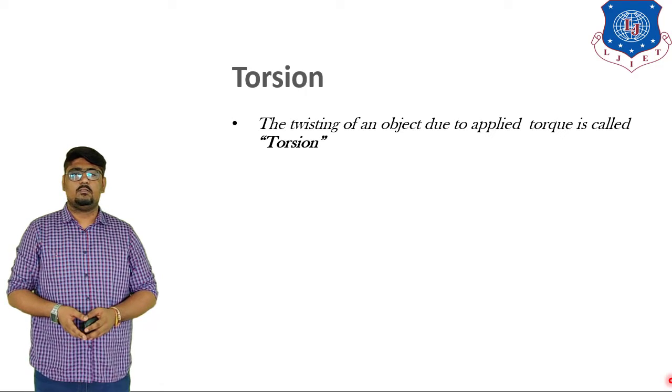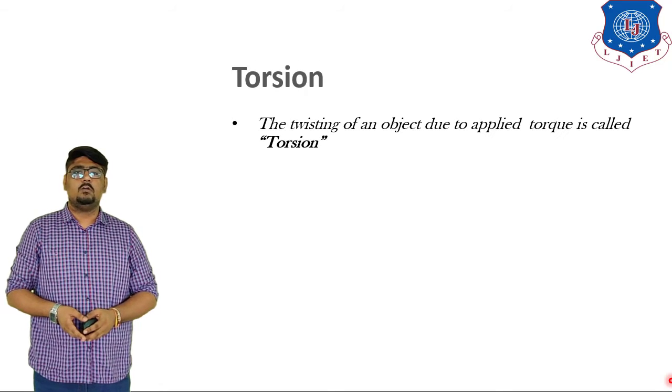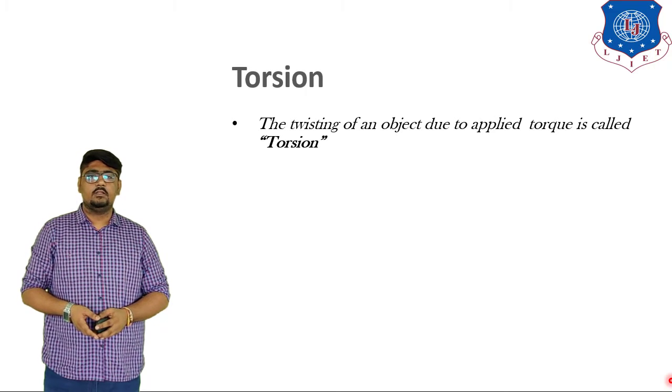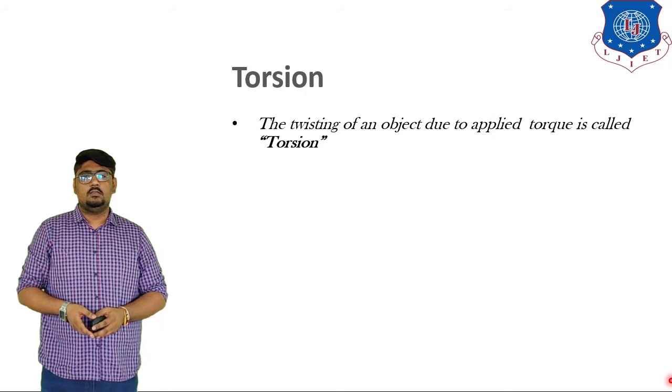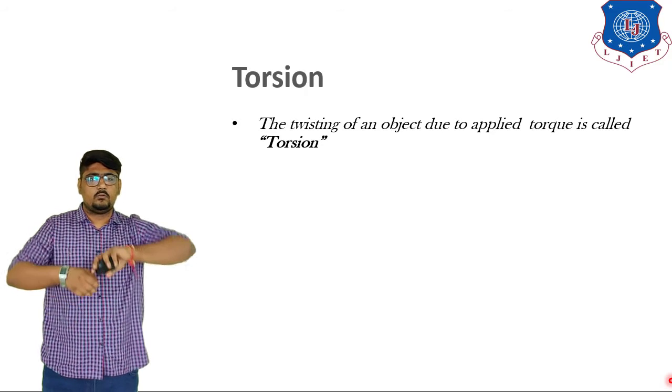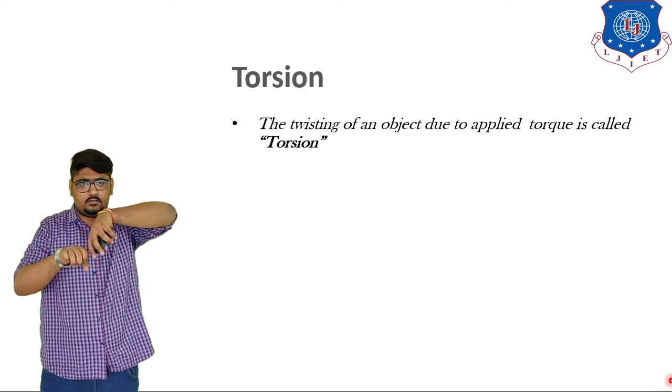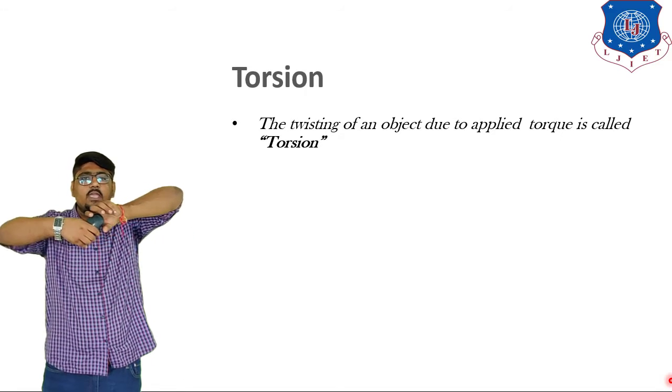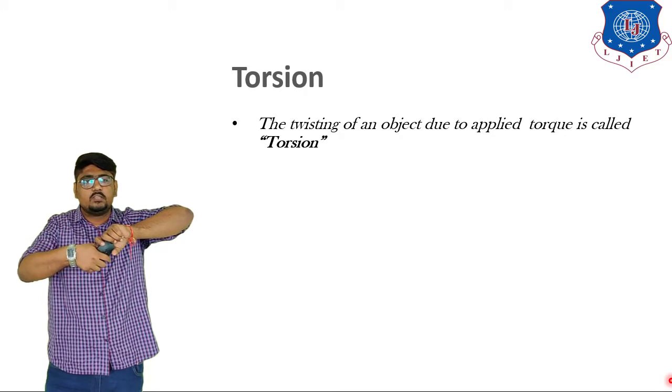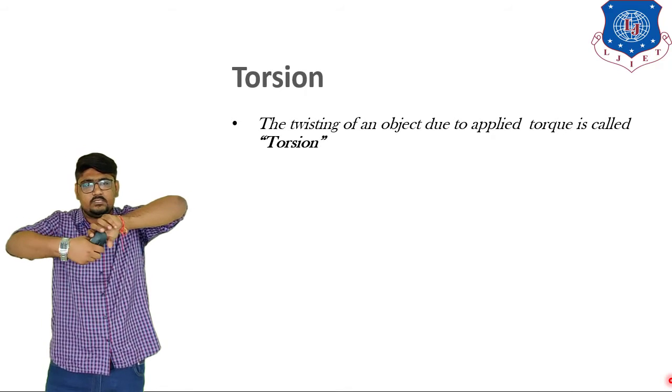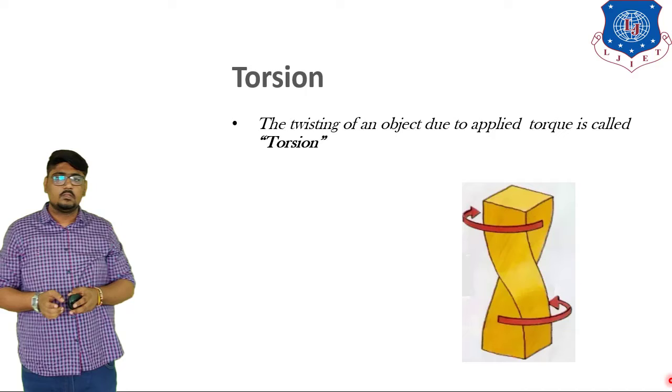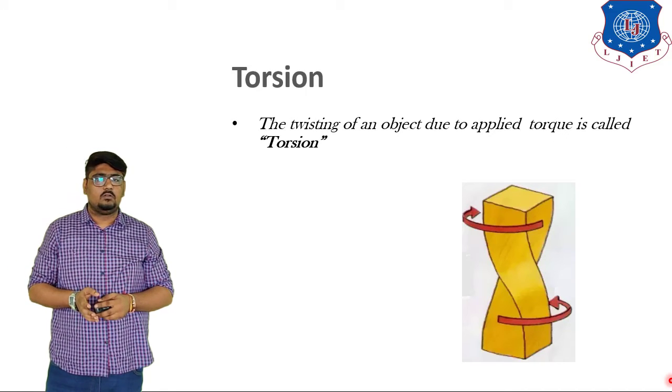But before moving further, let us first discuss what is torsion and torsional rigidity. The twisting of an object due to the torque is known as torsion. If you twist some object by applying a couple of forces or the torque as you can see in the figure, that is nothing but the torsion.